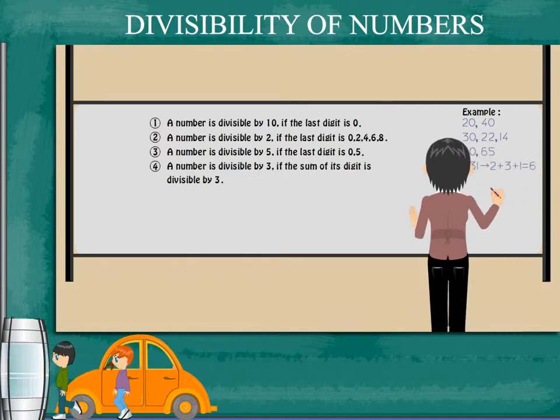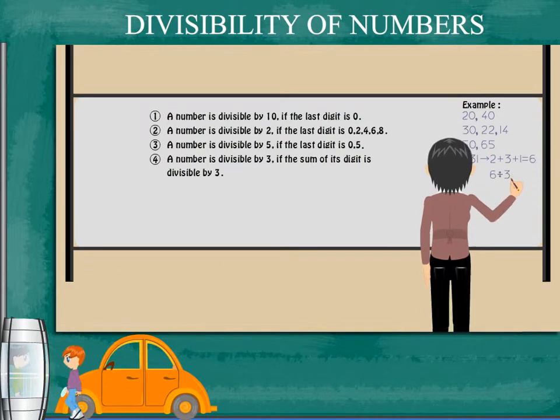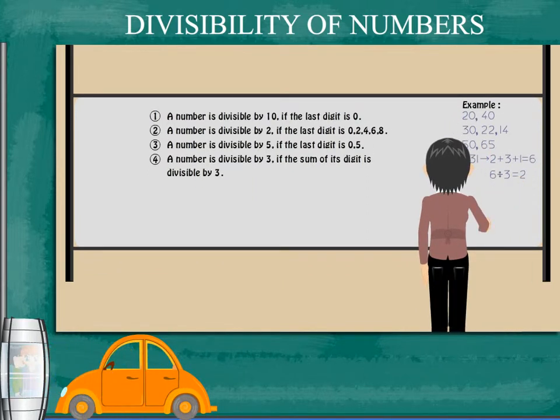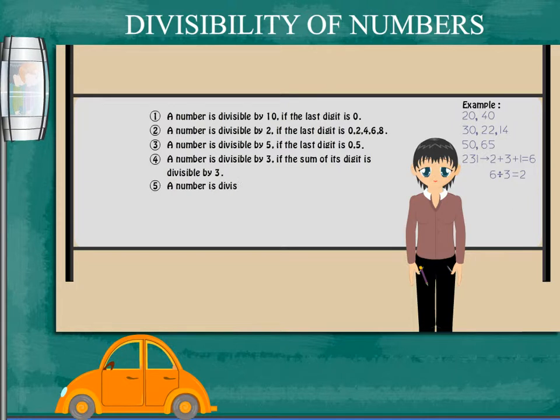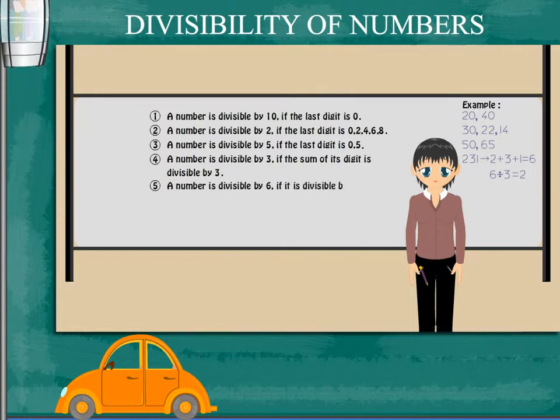For example, 231: the digits add up to 2 + 3 + 1 = 6, and 3 divides 6 two times.